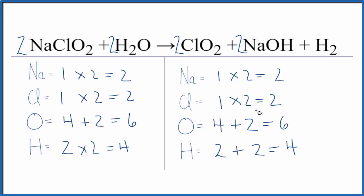So we really just had to work through this one until we ended up with all of these coefficients here giving us the same number of type of atoms on each side. This is Dr. B with the balanced equation for NaClO2 plus H2O.